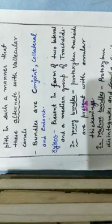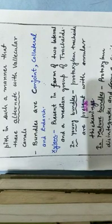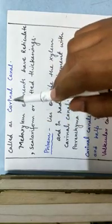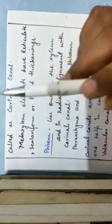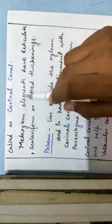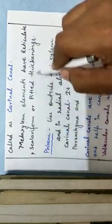This structure is called the carinal canal — another canal present in the stelar region in place of the protoxylem. The metaxylem elements have reticulate, scalariform, or pitted thickenings, meaning these mature elements have advanced thickening types.